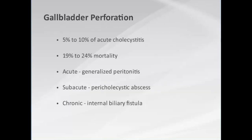Gallbladder perforation is the next step in the process and is very significant. It occurs in 5 to 10% of cases of acute cholecystitis and can carry significant mortality. It comes in three forms: acute perforation causing generalized peritonitis; subacute, where the omentum walls off the process forming a pericholecystic abscess; and chronic perforation, where the gallbladder adheres to an adjacent structure such as the duodenum or colon, potentially creating an internal biliary fistula with passage of stones.